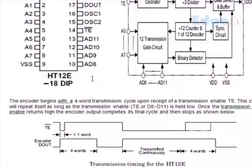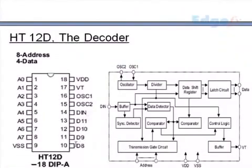D8 to D11 on the 12D - the device acts as a receiver of 4-bit data. That is 16 possible codes with 8-bit addressing.